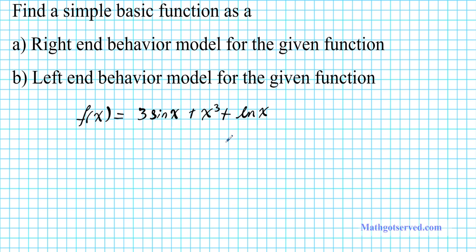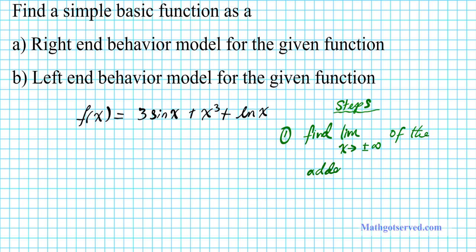Before we solve this problem, let's go over the steps for finding the end behavior models. Step number one: you want to find the limit as x approaches plus or minus infinity of the addend functions — the functions that you're adding. In this example we have three addend functions: 3 sine x, x to the third, and ln x. They're all competing, so you want to find the limit as x approaches infinity. After finding the limits of the addend functions, you focus your attention on the ones that approach plus or minus infinity.